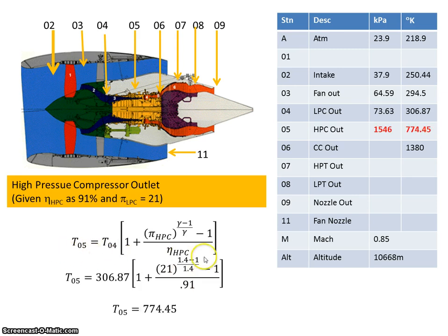And again, we use the same equation as we used for the low pressure compressor and the fan, except changing the station numbers for the output temperature of the high pressure compressor. When I plug the numbers in—21 for the high pressure compressor pressure ratio, 206 is the temperature in, 0.91 is the efficiency—I'll get 774.45.